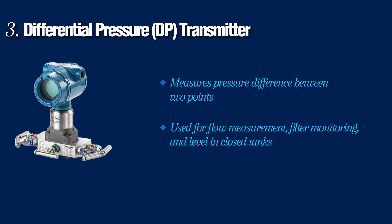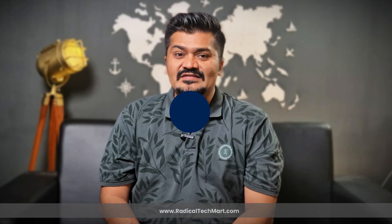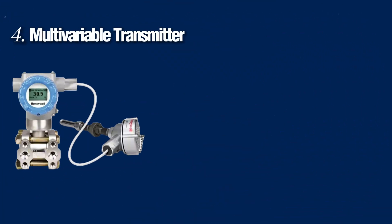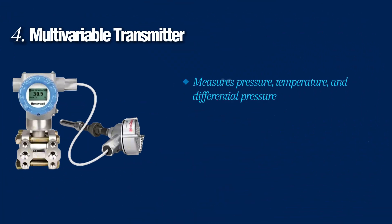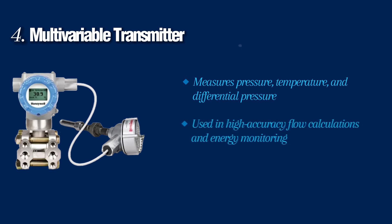The fourth type is the multivariable transmitter, which measures pressure, temperature, and differential pressure. It is used in high-accuracy flow calculations and energy monitoring. Now let's go step by step through the pressure transmitter selection guide.